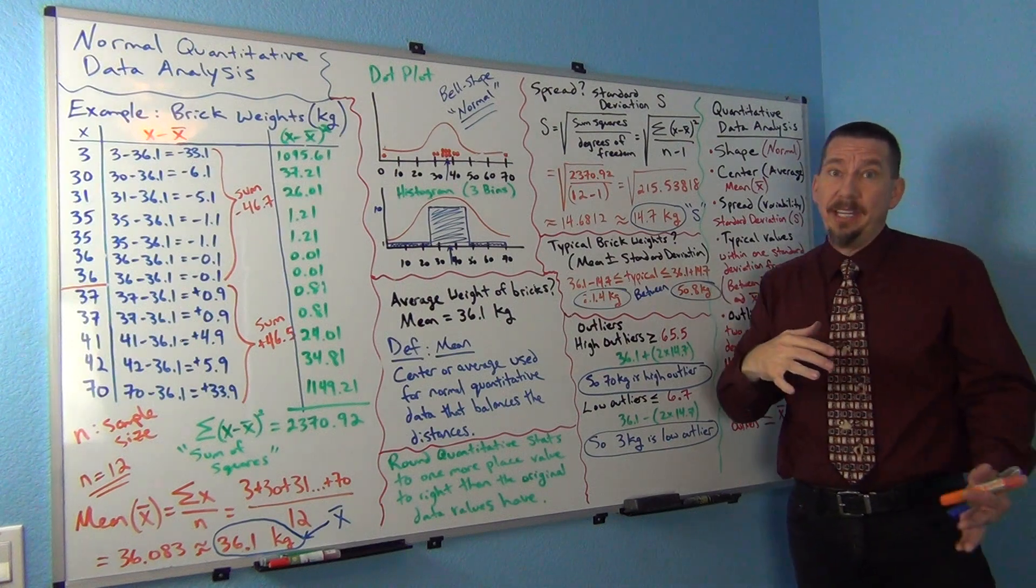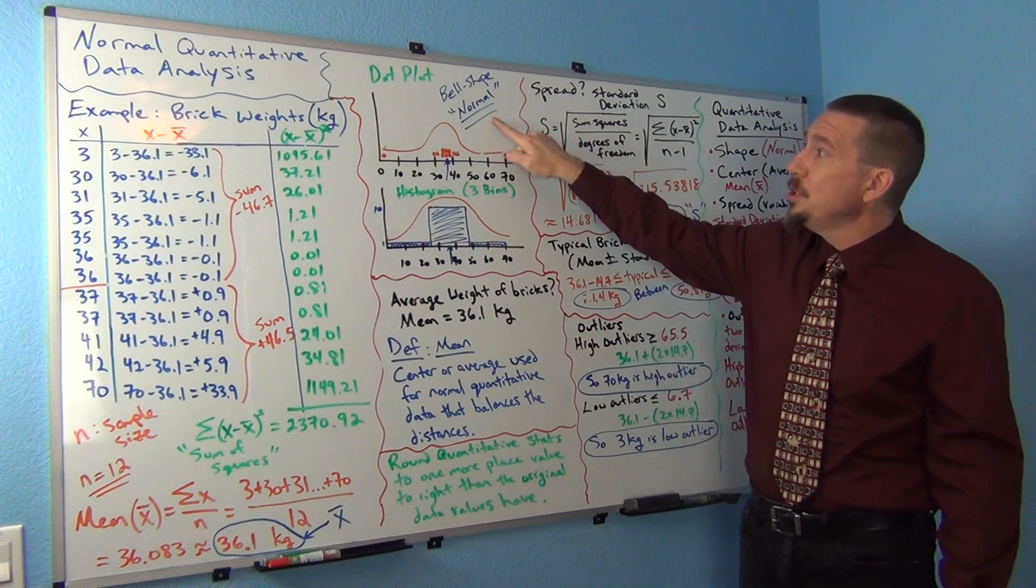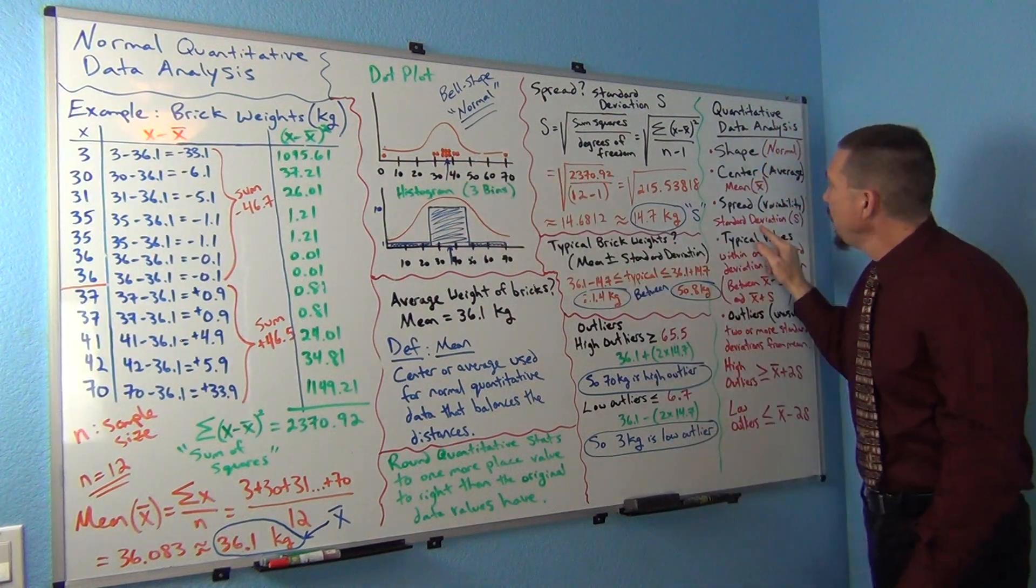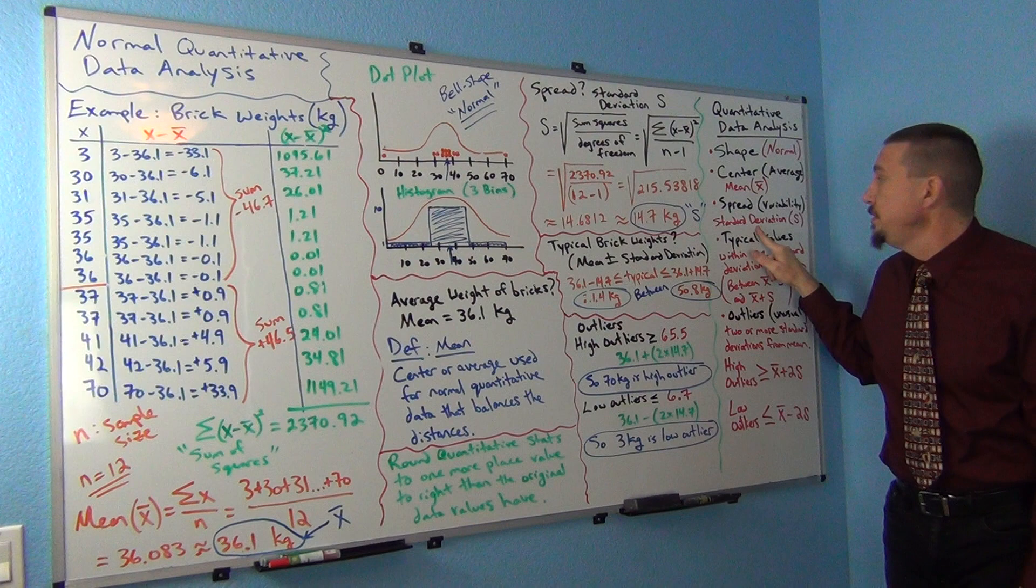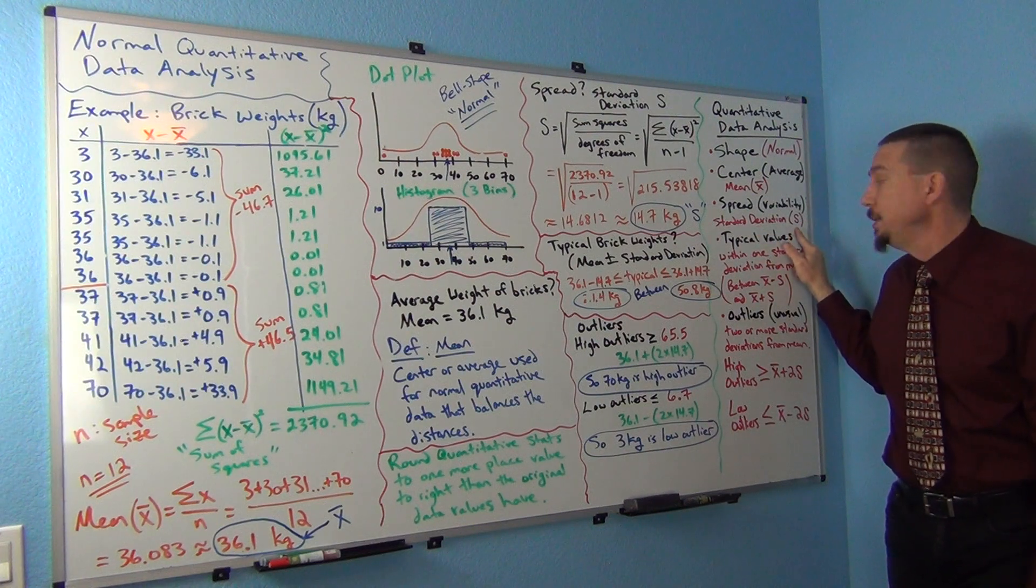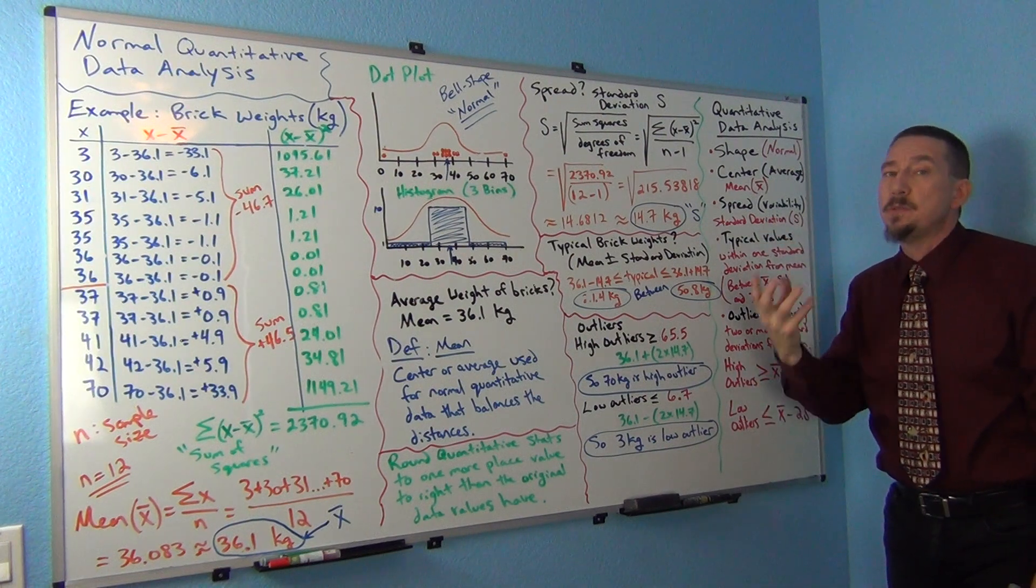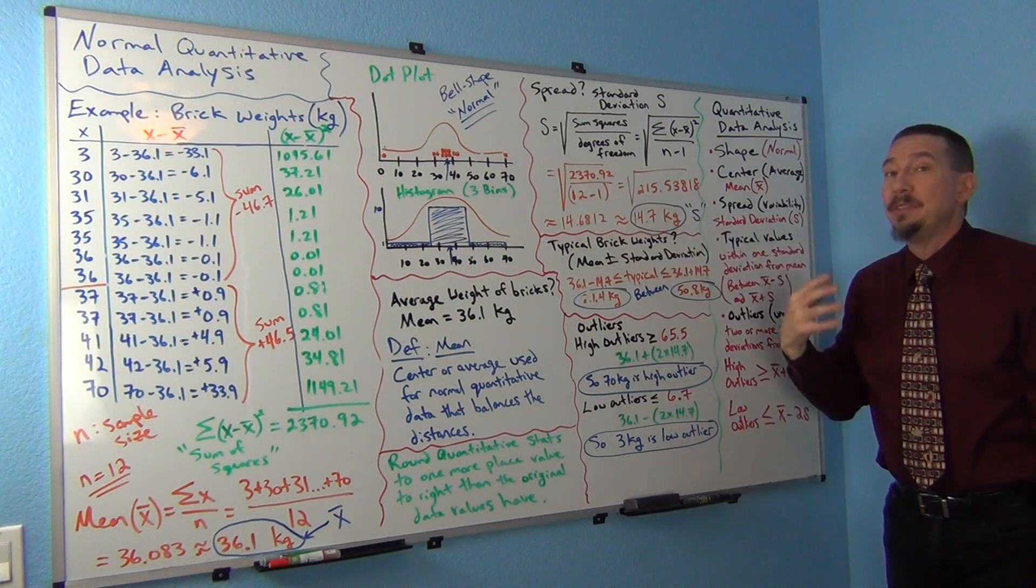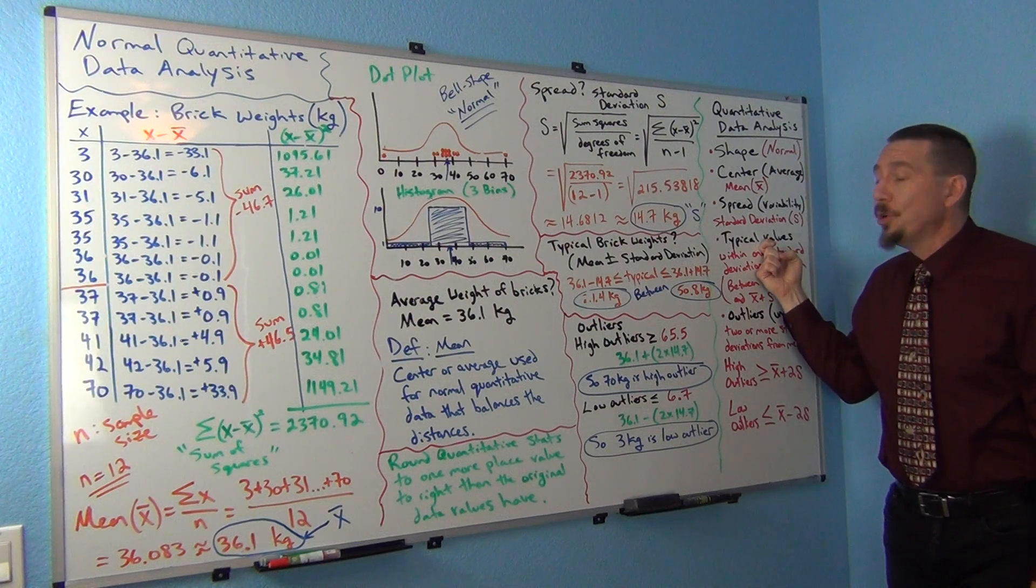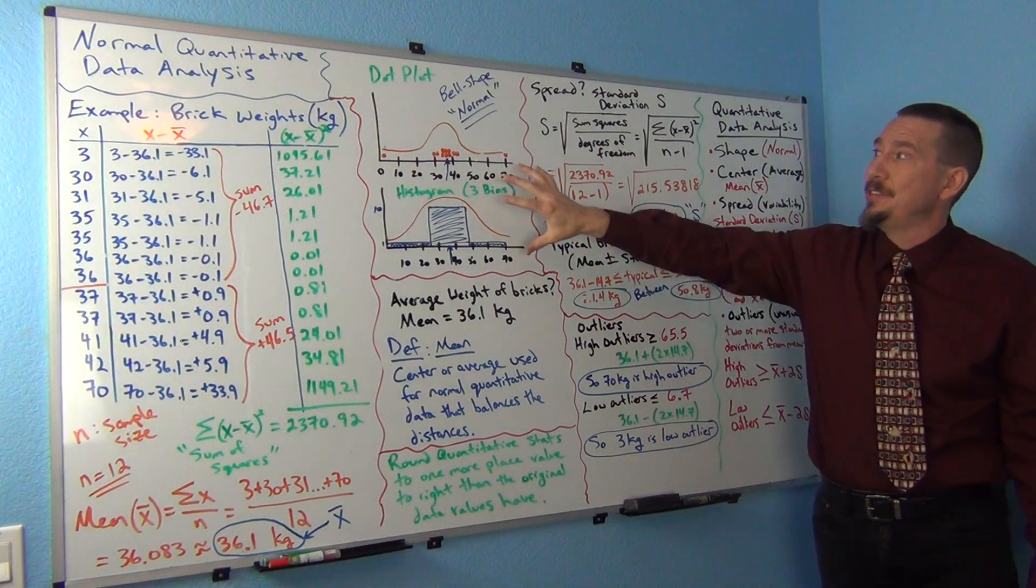So, think about spread as always very important. Now, what spread is accurate? Different spreads go with different shapes. For normal data, data that has this sort of bell shape like this, we use something called the standard deviation. Standard deviation or S is the most accurate measure of spread for normal data. It doesn't really work if you don't have normal data. Standard deviation was really designed for this kind of shape.